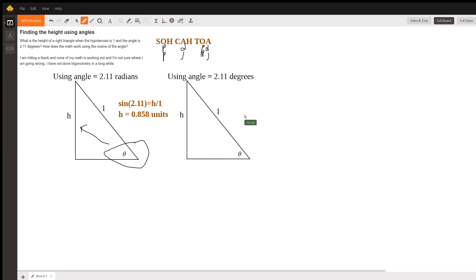Now if that was degrees, I would do the exact same thing. The situation is the same and we would get that sine of theta, which is 2.11, equals the height over 1, and the height over 1 is just the height. I probably should have said that up here. Anyway, now if I put my calculator into degrees...